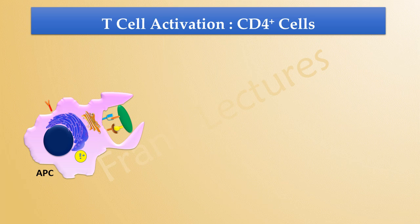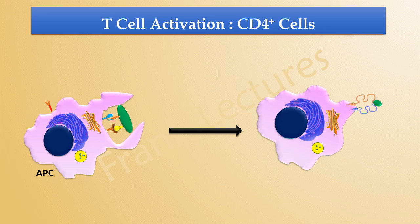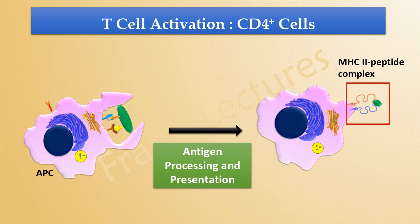An antigen presenting cell engulfs an extracellular antigen by the process of phagocytosis. This APC digests the engulfed antigen into peptide fragments and displays the peptide fragment on its plasma membrane. The peptide antigen is present on the surface of the antigen presenting cell as an MHC-2 peptide complex. This process is known as antigen processing and presentation.